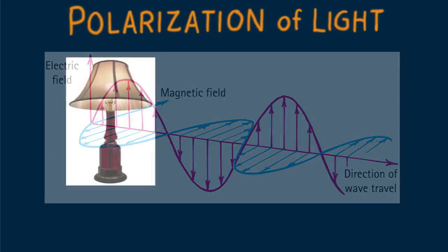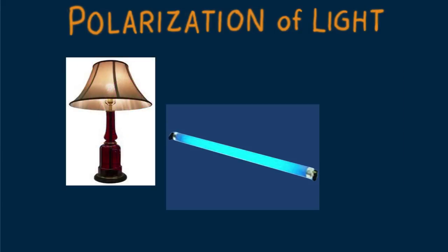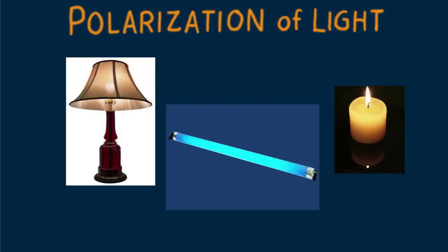A common light source, such as an incandescent lamp, a fluorescent lamp, or a candle flame, emits light that is unpolarized. This is because there is no preferred vibrational direction for the accelerating electrons emitting the light.